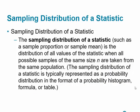The sampling distribution of a statistic — such as the sample proportion or sample mean — is simply the distribution of all values of the statistic when all possible samples have the same size and are taken from the same population. It is typically represented as a probability distribution, probability histogram, formula, or table. For example, if we take 1,000 samples of size 50 from a population and graph them, they will follow a normal curve. The more samples you take, the closer it will be to a normal distribution.